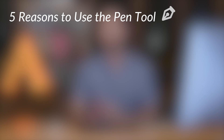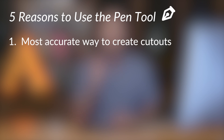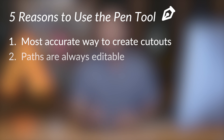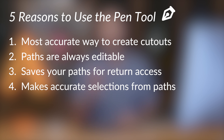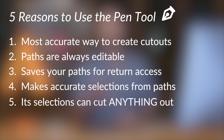So why would you want to use the pen tool? I've got five great reasons. Number one, it is the most accurate way to create cutouts in Photoshop. Your pen paths are always editable, so if you make a mistake or want to change them, no problem. You can save your pen paths — they're stored in the paths dialog and you can access them at any time. You can make accurate selections from your paths, and use those selections to cut anything out of its background.